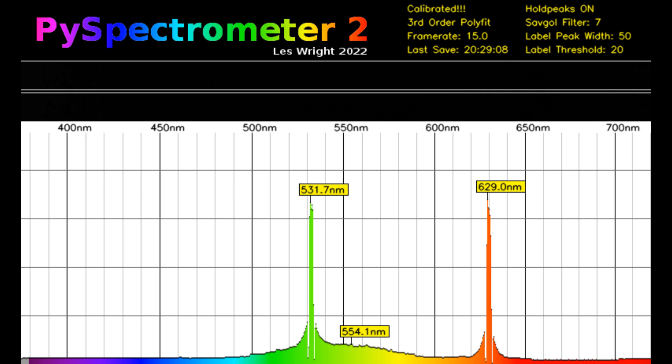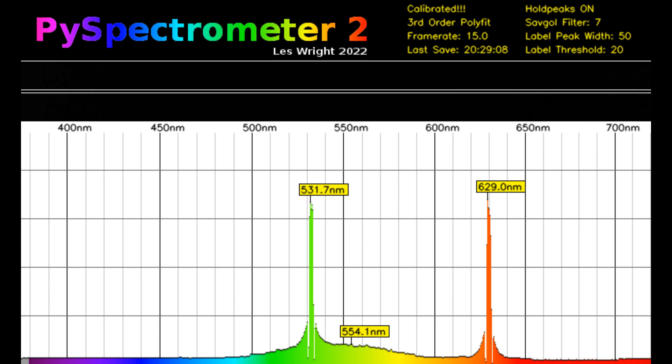If we take a look at the output from the Raspberry Pi spectrometer we can see a peak at 532 nanometers which is the pump wavelength and the very narrow Raman shifted output at 629 nanometers. This is a shift of around 97 nanometers.